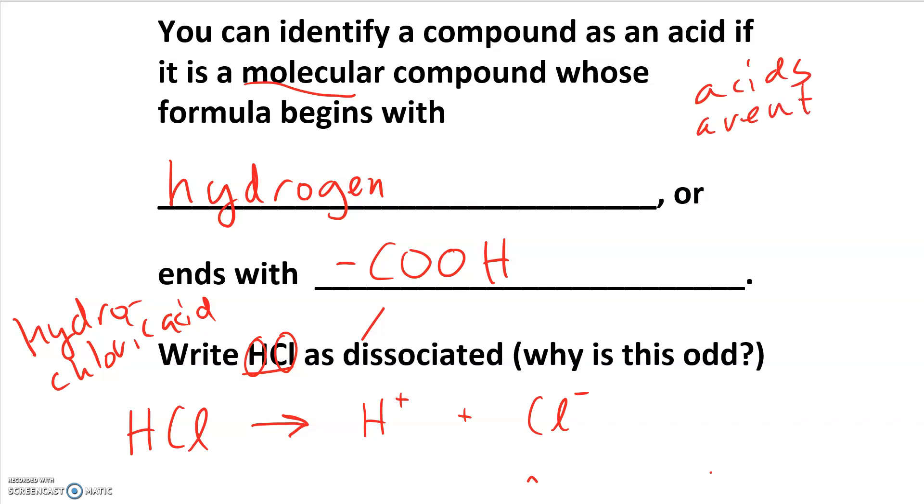This is an example of a non-ionic substance dissolving in water and turning into ions. So that makes acids different. Acids aren't ionic but create ions.